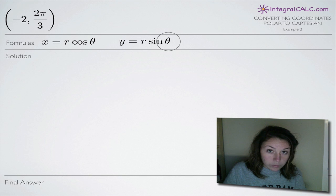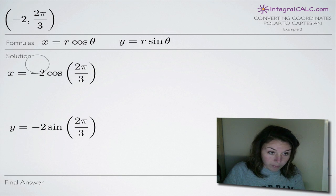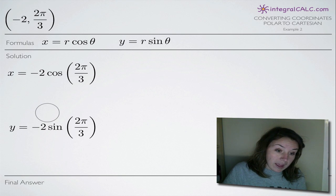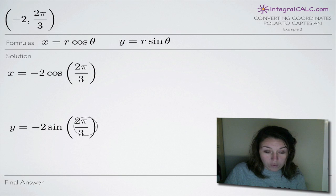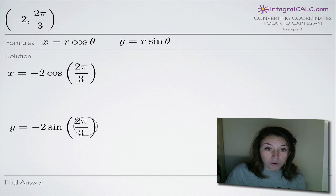The two equations that we'll come up with are: x equals negative 2 cosine of 2pi over 3, and y equals negative 2 sine of 2pi over 3. It's as simple as that — we're plugging in negative 2 for r and 2pi over 3 for theta.